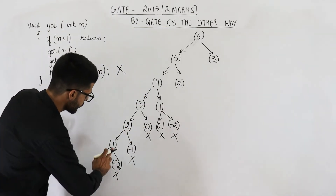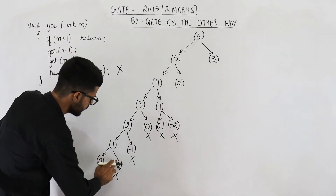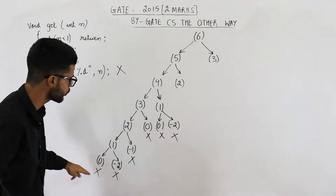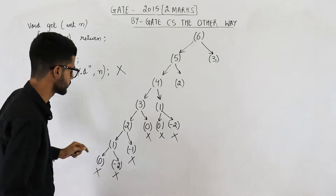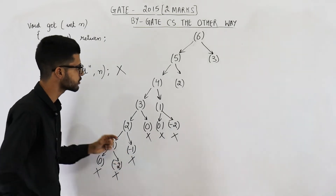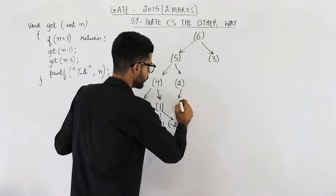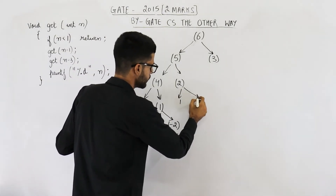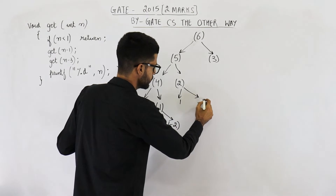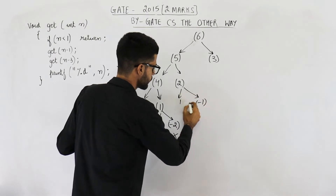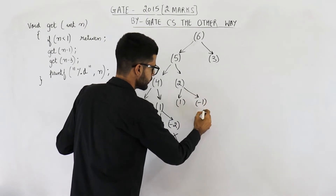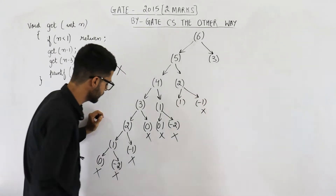So copy these 4 things as it is: get(1) and get(minus 1). Get(minus 1) is going to end immediately.